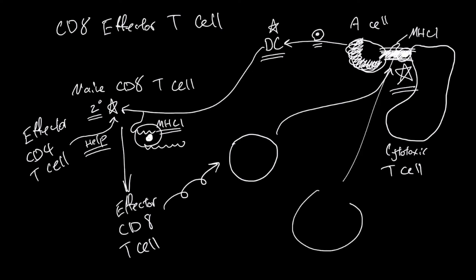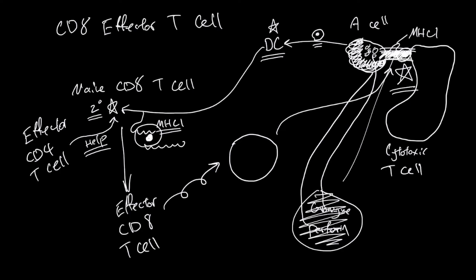These granules contain things like granzyme and perforin. Perforin can open up a hole on this cell's membrane, and granzymes can go through the hole and break the target cell's nucleus. The toxic things in the granule will trigger target cell apoptosis. Cytotoxic T cells secrete Fas ligands, and when a Fas ligand binds to a Fas receptor, which is commonly expressed on immune cells or blood cells, this Fas signaling also triggers apoptosis.